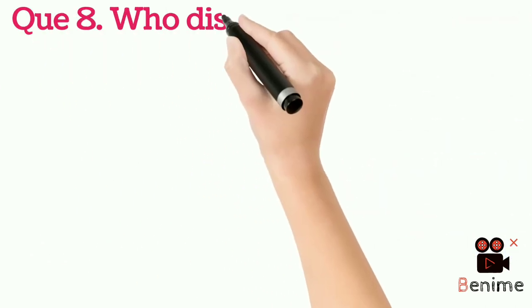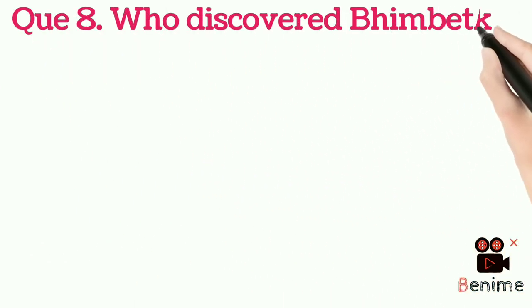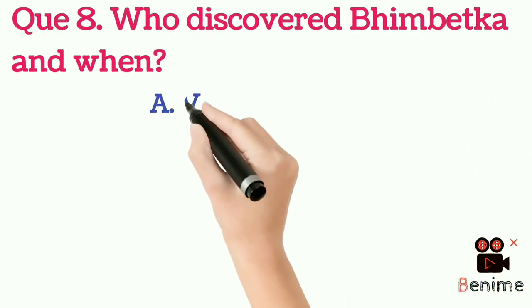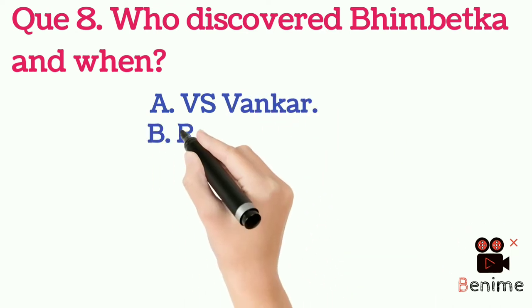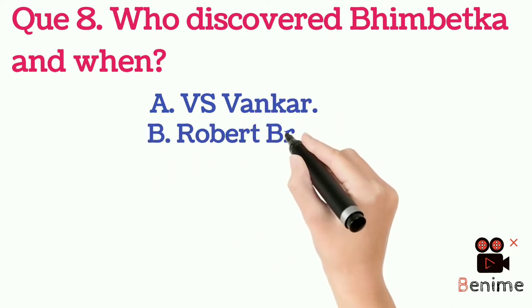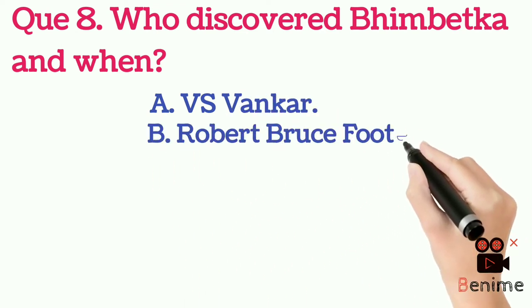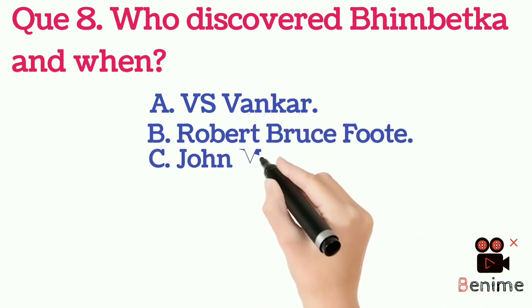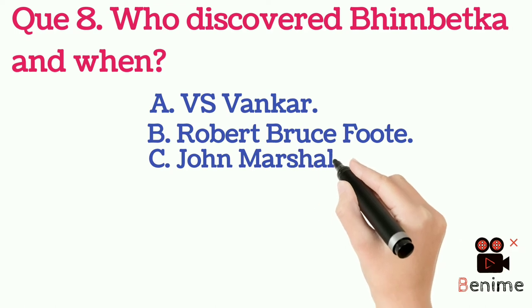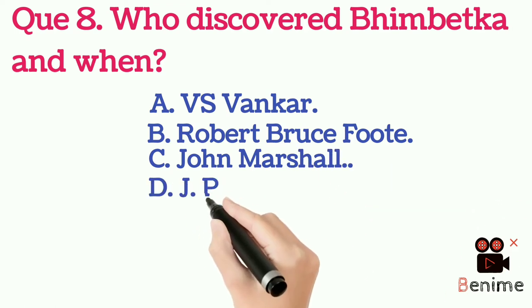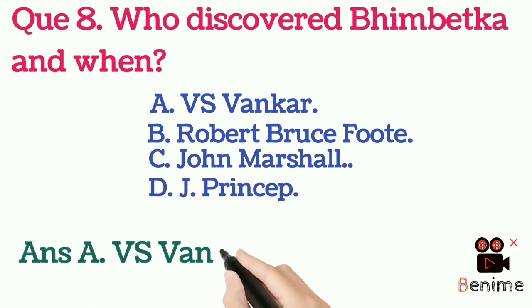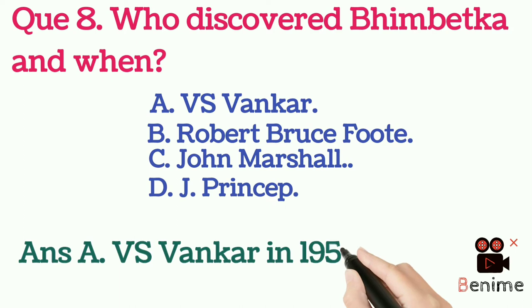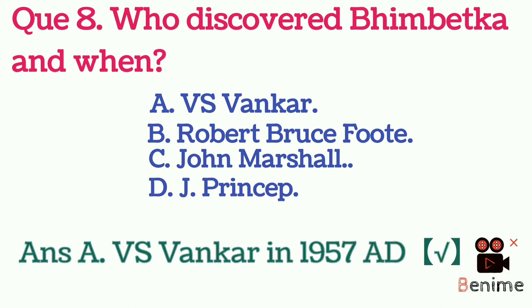Question 8: Who discovered Bhimbetka and when? A. V.S. Wakankar. B. Robert Bruce Foote. C. John Marshall. D. J. Princip. Answer A: V.S. Wakankar, in 1957 AD.